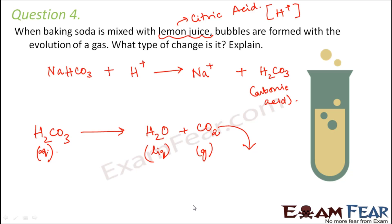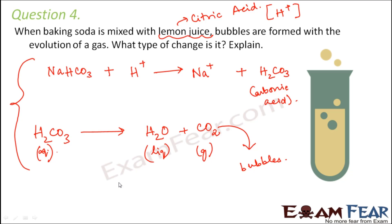The carbonic acid in aqueous solution forms liquid water and gaseous carbon dioxide. This CO₂ is released as bubbles — that is how the entire chemical reaction takes place when baking soda is mixed with lemon juice. A lot of chemical changes take place, so undoubtedly this is a chemical change.